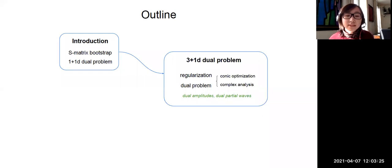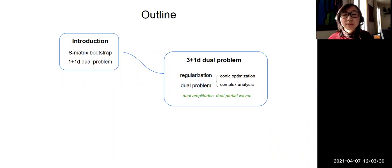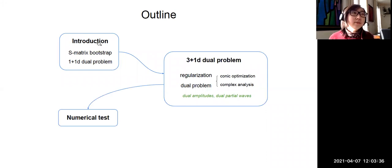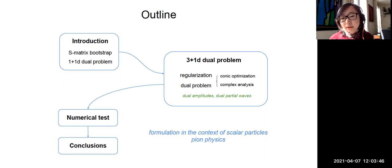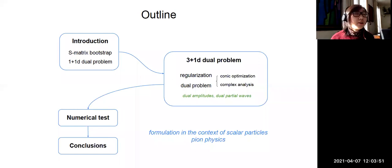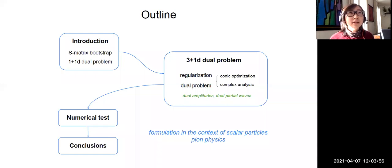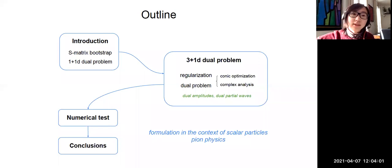For the complex analysis approach, I'll introduce concepts such as dual amplitudes and dual partial waves. After that I'll show some numerical test results, and then the conclusions. The whole formulation will be done in the context of scalar particle scattering related to pion physics. For most of the talk I'll focus on single flavor pion for simplicity, but at a certain point I'll summarize the result for the case with O(N) global symmetry.